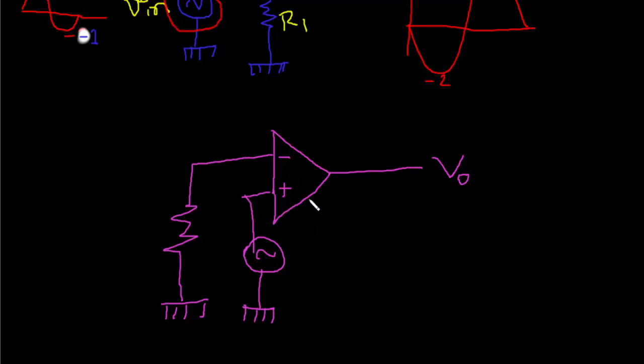We have the voltage source here on the positive side, another resistor here. This is R2 and this is R1.